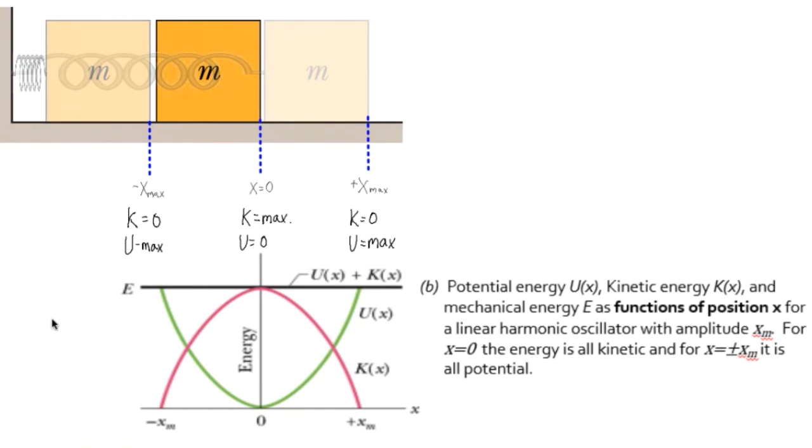Now let's look at our graph as a function of position. In the midpoint of the oscillation, that's where my potential energy is zero because the spring is relaxed, and the velocity is maximum, so the kinetic energy is maximum, and that's the red curve you see here. And the potential energy is zero, the green curve, at the center point.